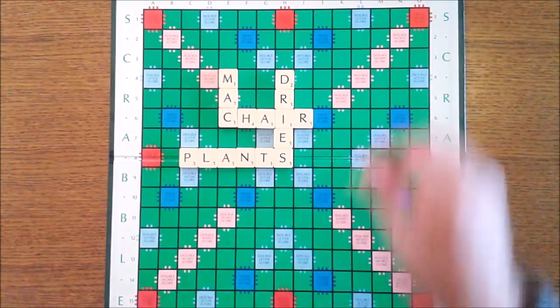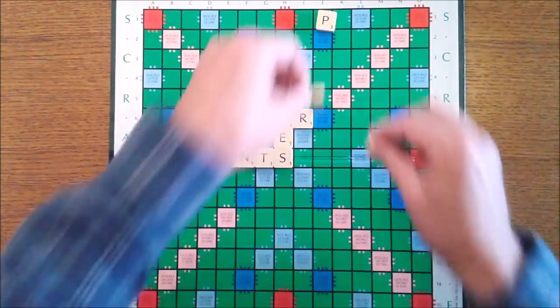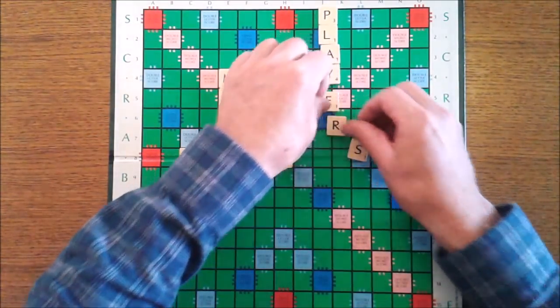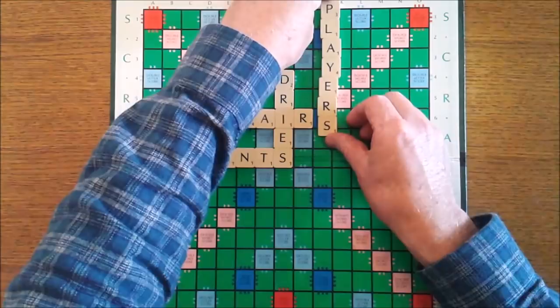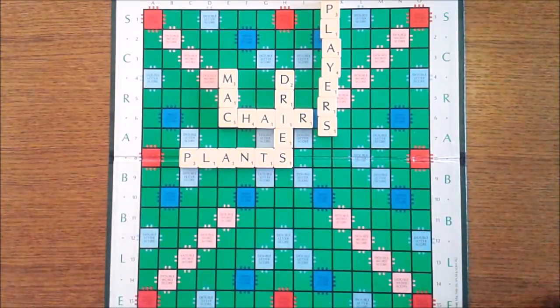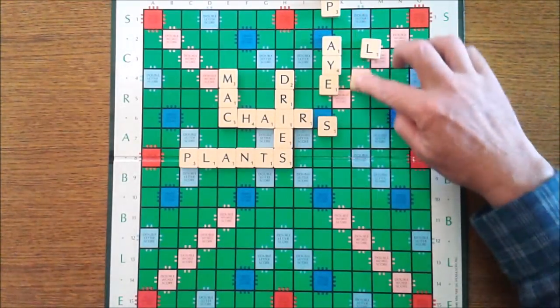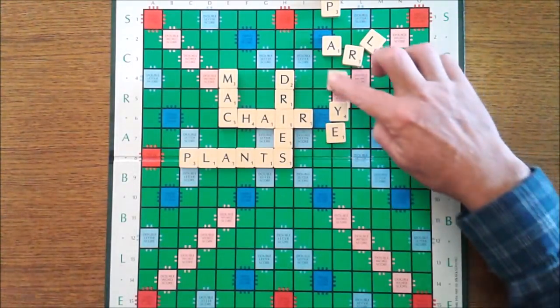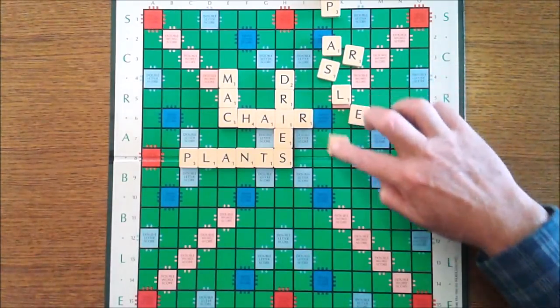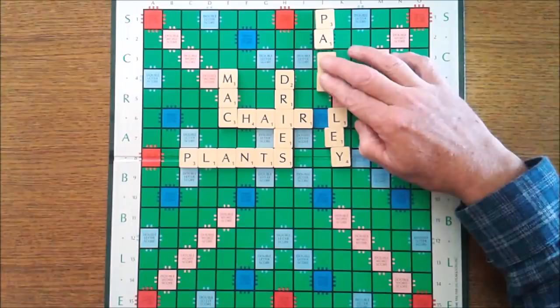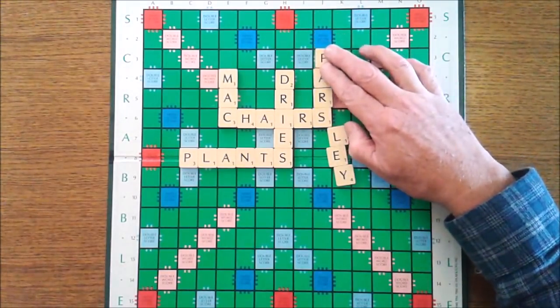But unfortunately it doesn't fit here. If I put this down here, the S occurs in the wrong place to do chairs, and this is where you need your anagrams because an anagram of players is parsley, and then it will fit. The S in that position.